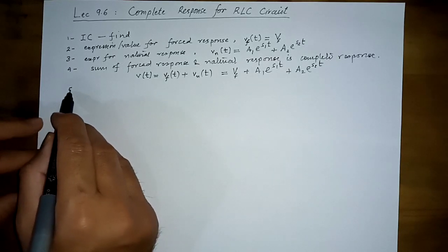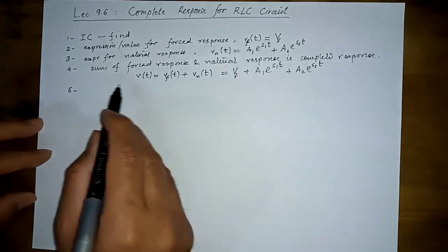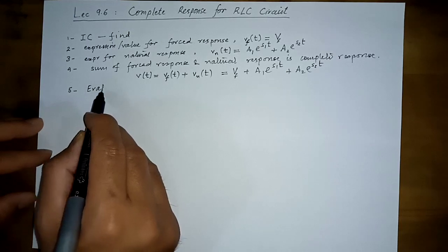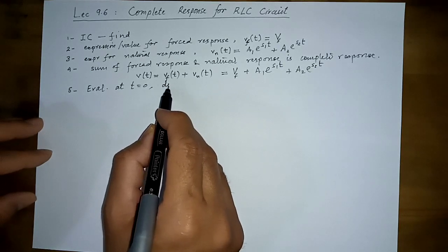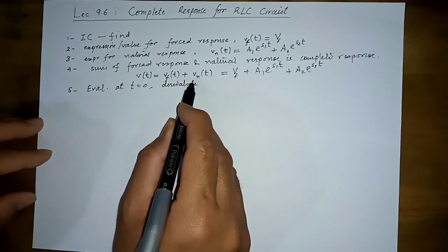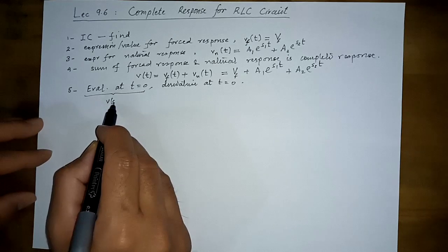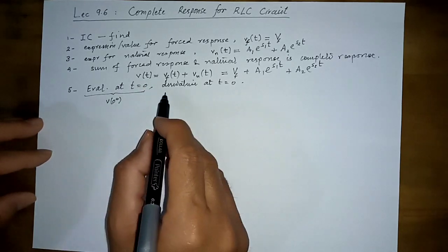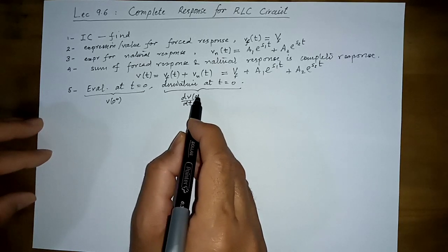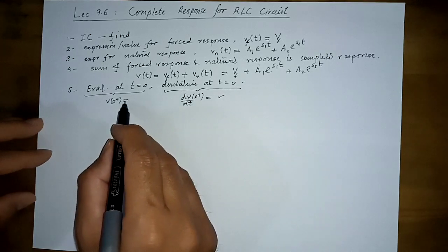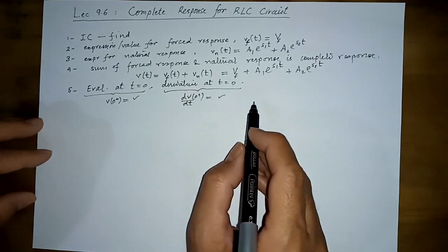The last step is to evaluate the complete expression at t = 0, and also evaluate the derivative of that expression at t = 0. This gives us two equations — one for v(0) and one for dv/dt at 0 — which we can solve to find A1 and A2.